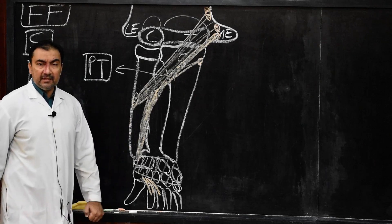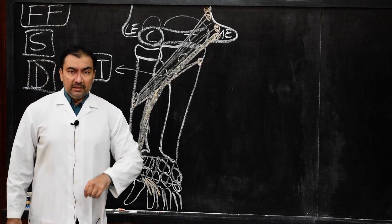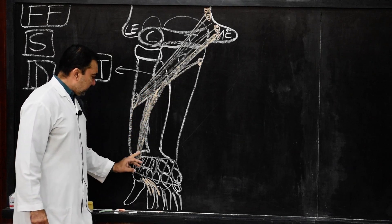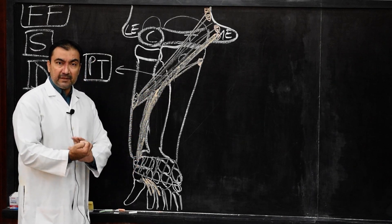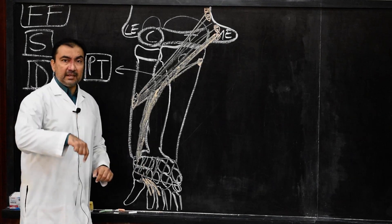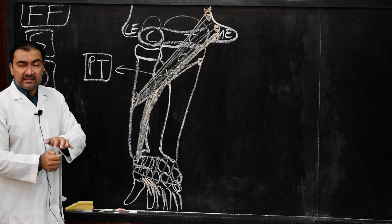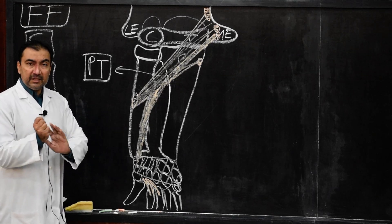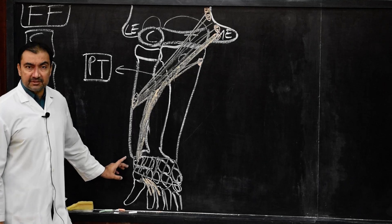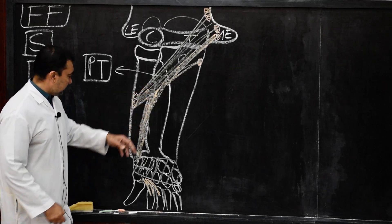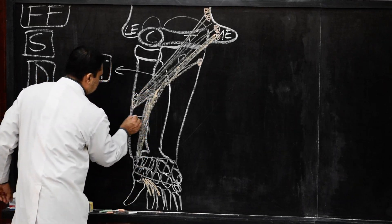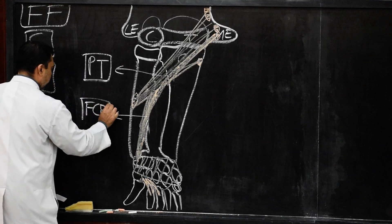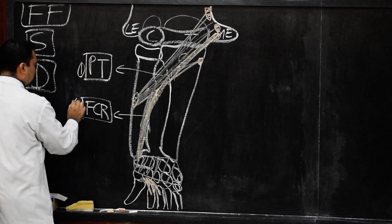The nerve supply of flexor carpi radialis is the median nerve. The action of flexor carpi radialis is flexion of the wrist joint, and at the same time it helps in abduction of the wrist joint along with extensor carpi radialis longus and brevis. This completes muscle number 2 — flexor carpi radialis.